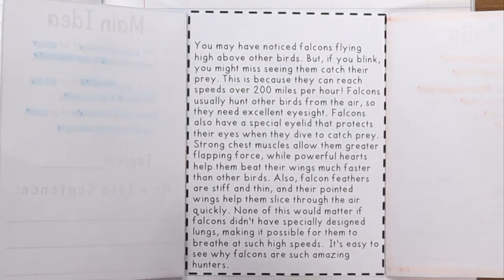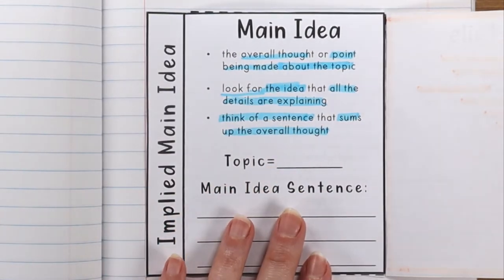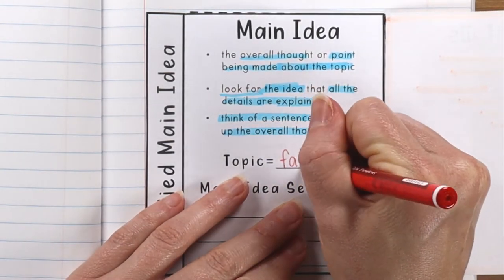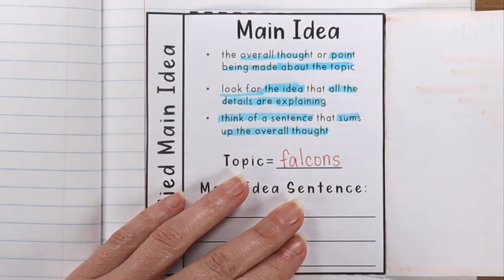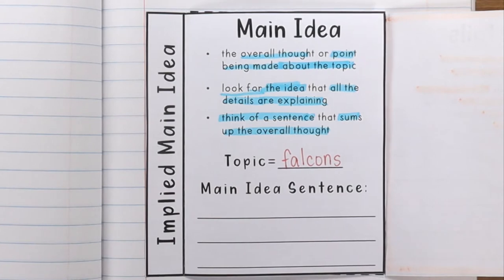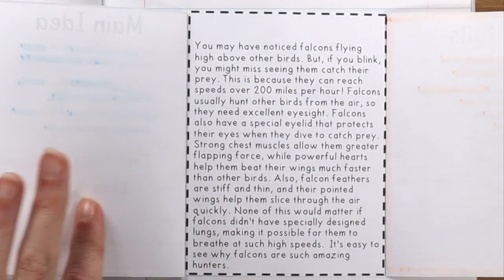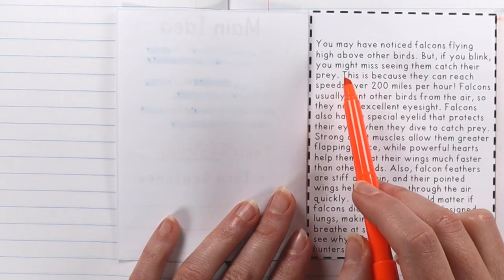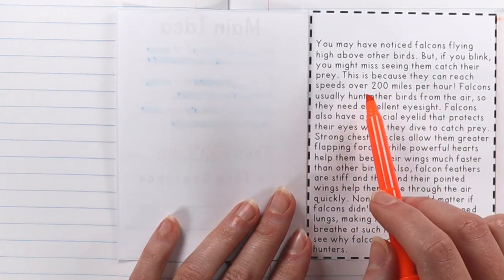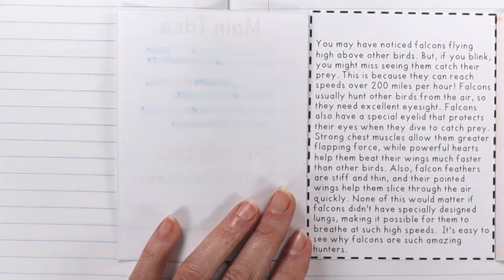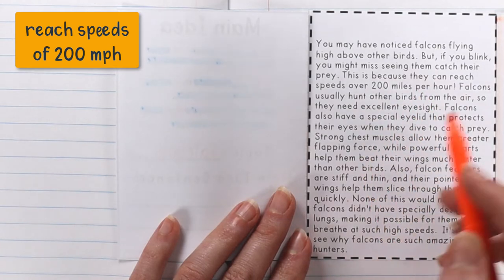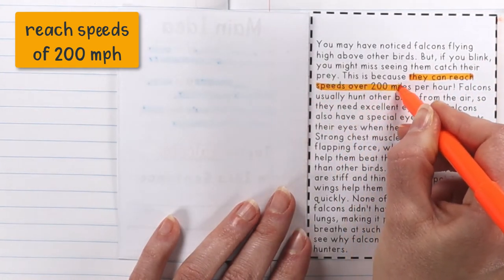Now that we've read this passage, we know the topic is falcons. We're just going to write that here. Remember, the topic is just going to be one or two words telling us what the subject is. We know it's about falcons, but we've got to figure out what the main idea is that it's telling us about falcons. The first two sentences say you might have noticed a falcon flying high above other birds, but if you blink, you might miss seeing them catch their prey. This is because they can reach speeds of over 200 miles per hour — so these are very fast birds. We're going to highlight this.